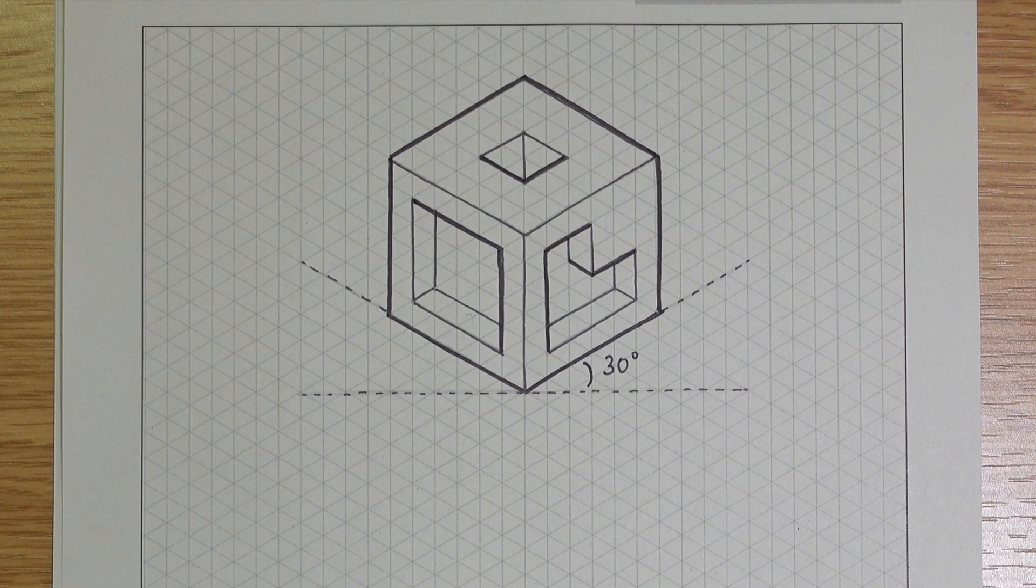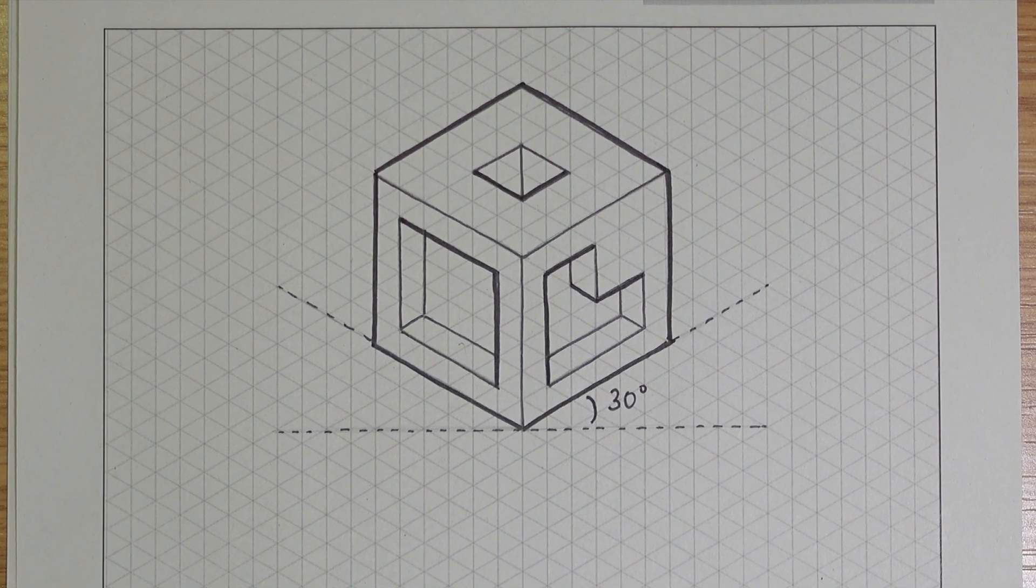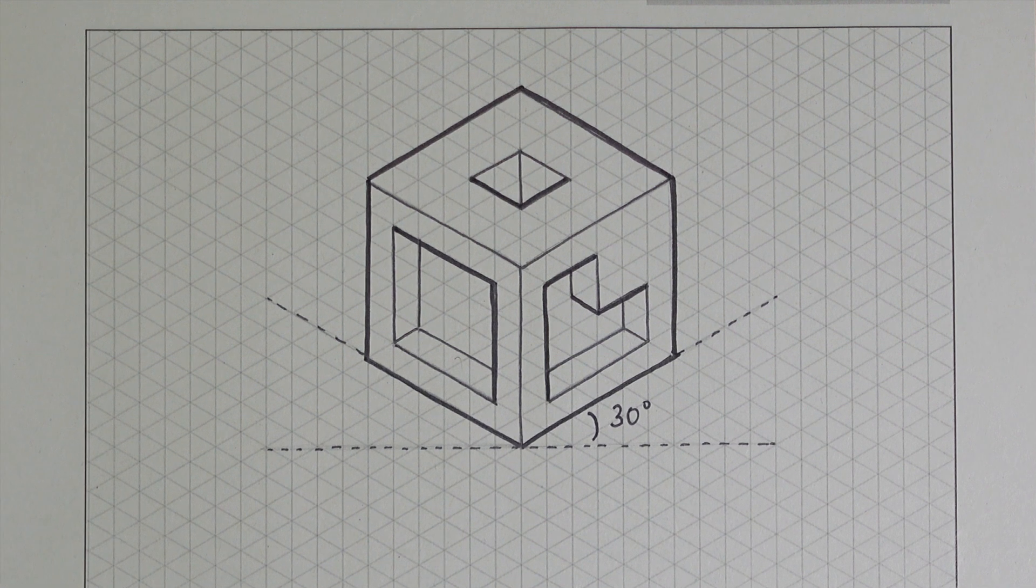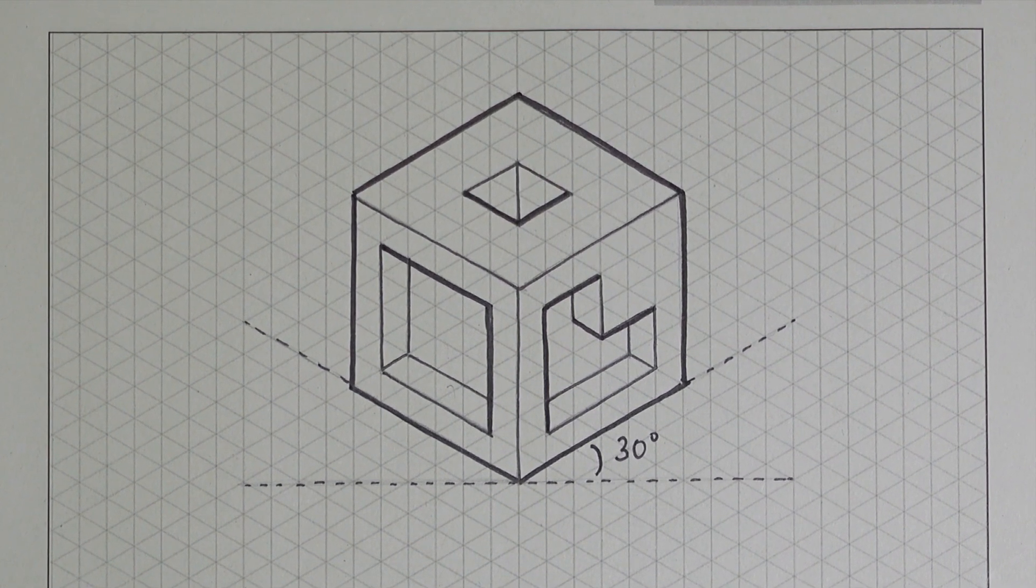We'll begin by drawing a simple cube and then add a little extra detail on each face. We'll lightly sketch the outline, then go over with a fine line pen, and finish by adding some heavier lines.